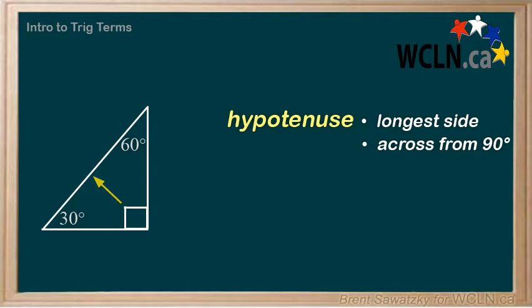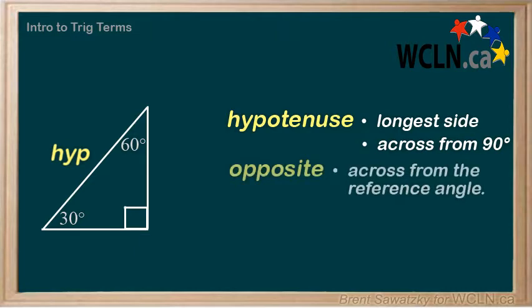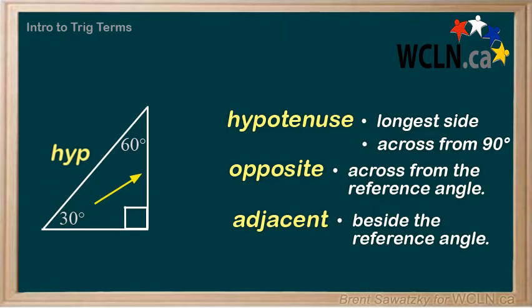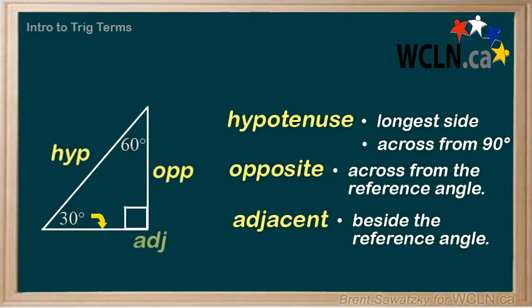So this makes sense. Let's label our hypotenuse. We've named one of our sides and we have two more to name: the opposite side and the adjacent side. These aren't names we can attach until we know which angle we're using as a reference. If this is the reference angle, then the side opposite to this angle would be the opposite side, and the side that is adjacent or beside the angle would be our adjacent side.